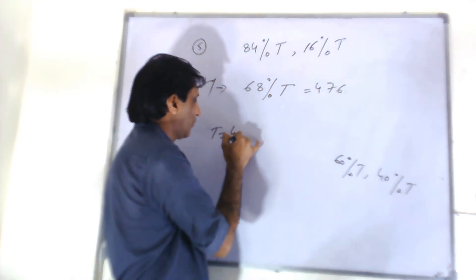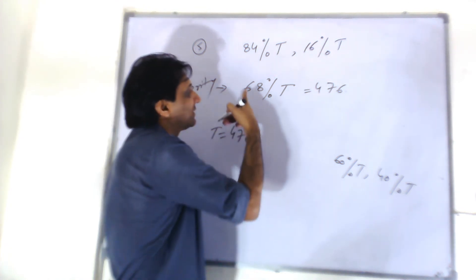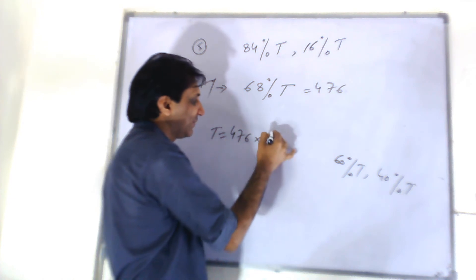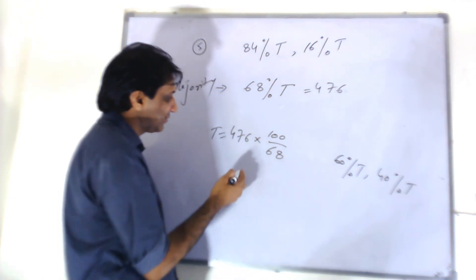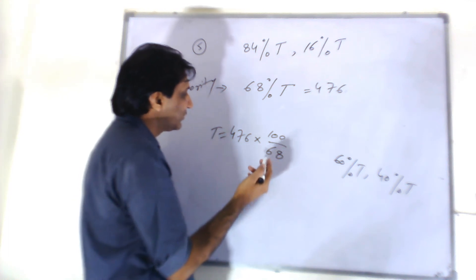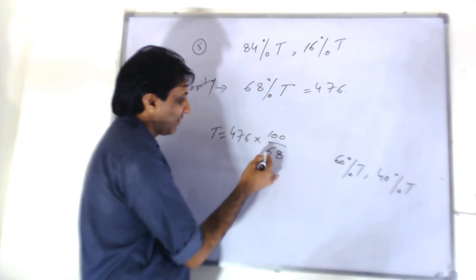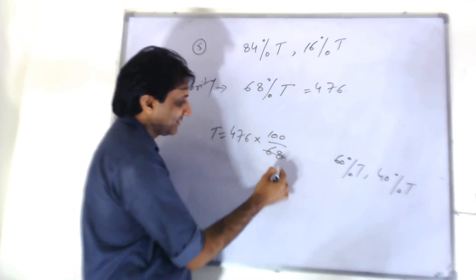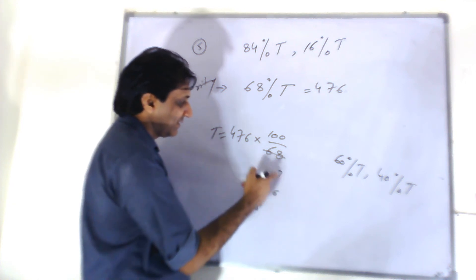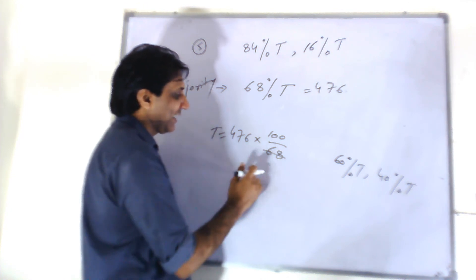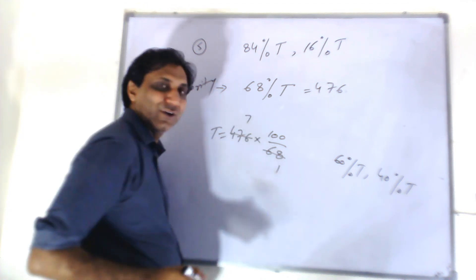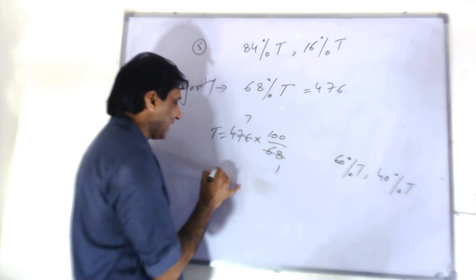T is equal to 476 times 100 divided by 68. You can cancel these two out. What was 68 times 7? 7×8 is 56, 6×7 is 42 and 5 is 47. Yeah, it goes into it 7 times. 68×7 is 476. So it's 700.